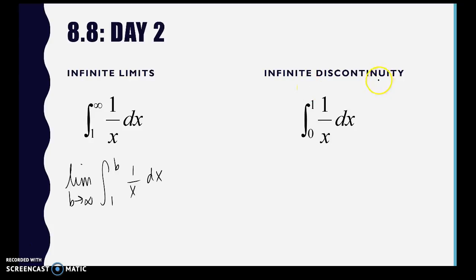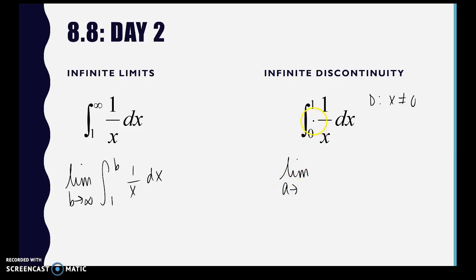Now with infinite discontinuity, notice the function here — the domain restriction is that x cannot equal 0. Since 0 is one of the boundaries, we have to set that up as a limit as well. Going from 0 to 1, we approach 0 from the right-hand side, so we integrate from a to 1. Improper integrals always need a limit to evaluate whether they converge or diverge.